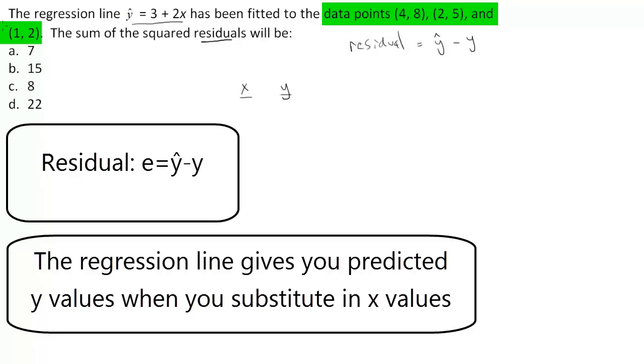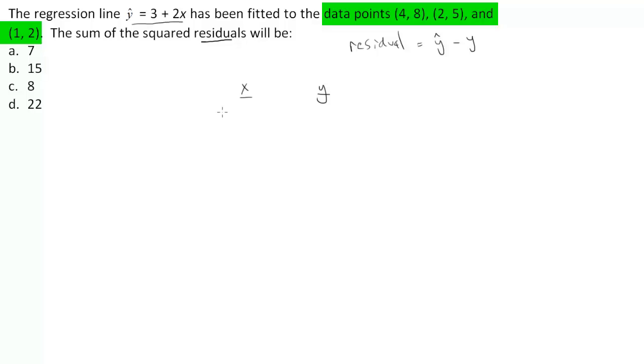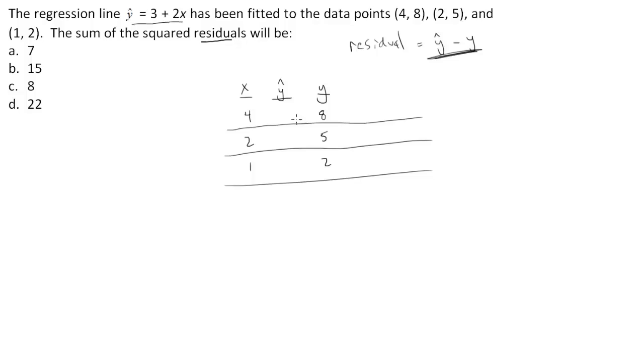Let me put a bit of space between these. They gave me some data pairs: I've got 4 and 8, that's my first data pair, 2 and 5 is my second data pair, and then 1 and 2 is my third data pair. Now, considering that residuals are the predicted y minus the actual y, I want to be able to put in predicted y for each one of these, and then I can take that predicted y and minus the actual y and get my residual.